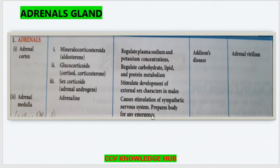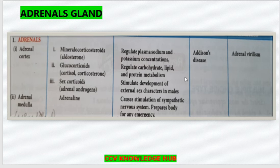Adrenaline prepares the body in any emergencies and different situations. The disorders regarding adrenal glands: under-secretion of these hormones causes Addison's disease, and over-secretion causes Adrenal Virilism.